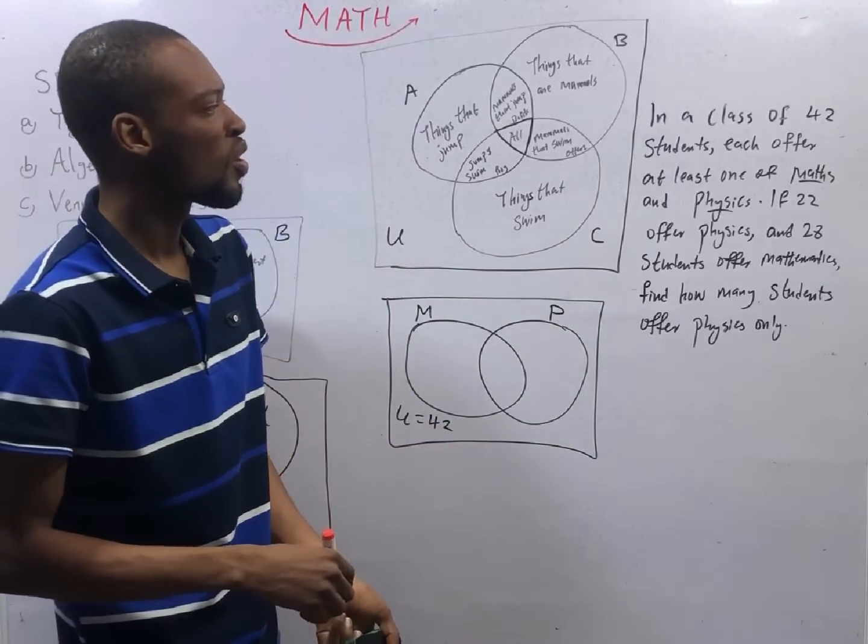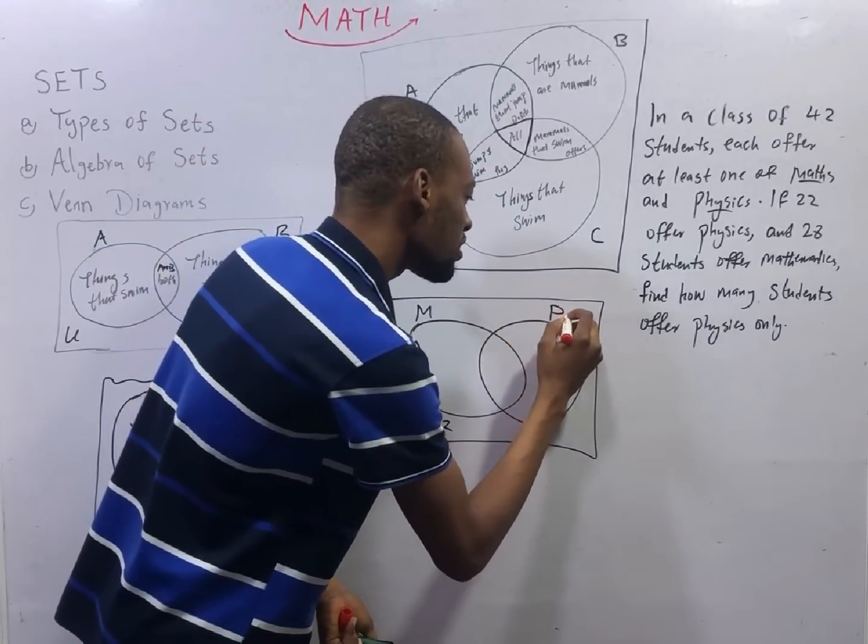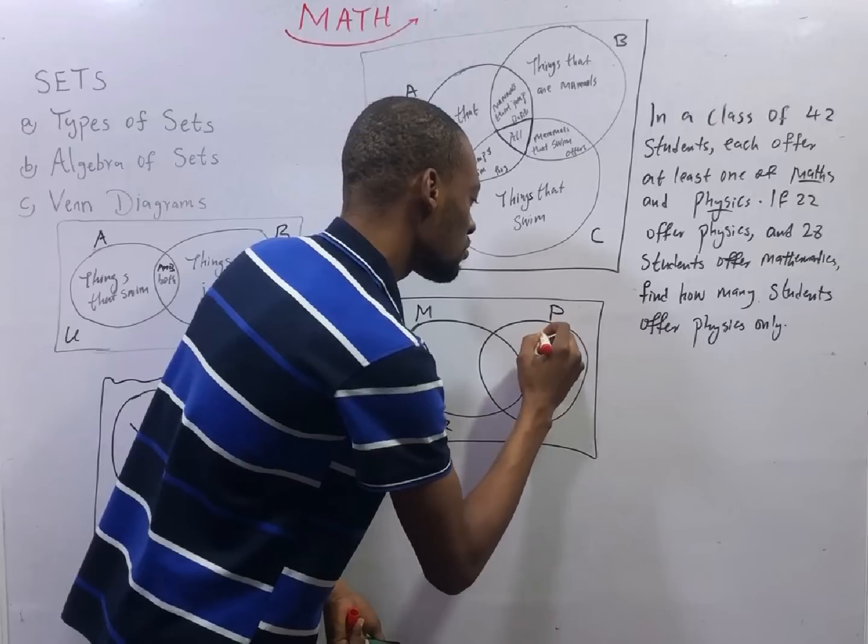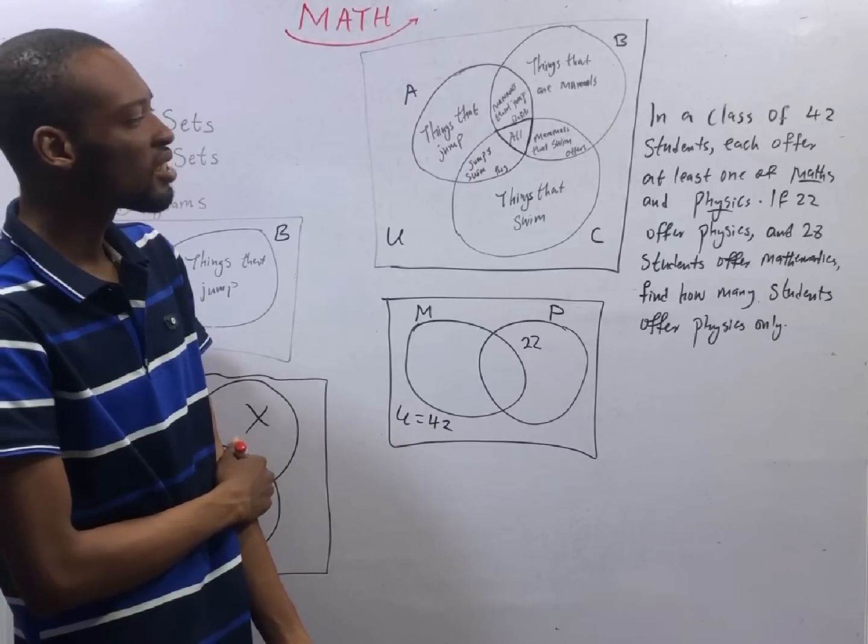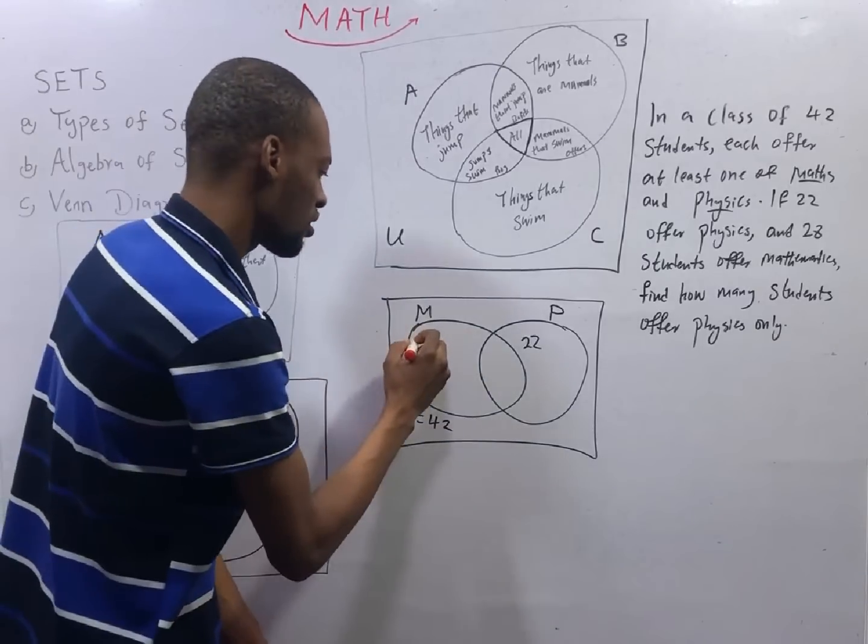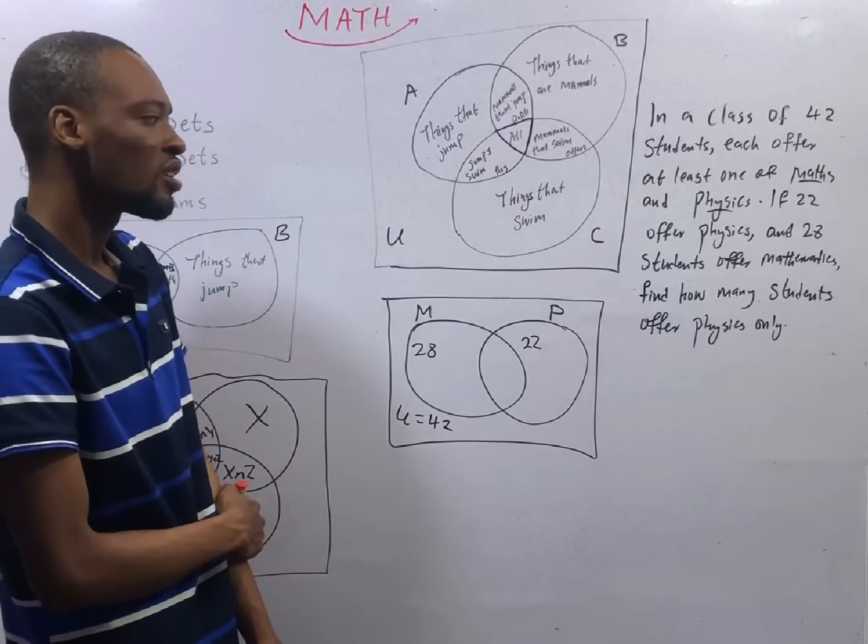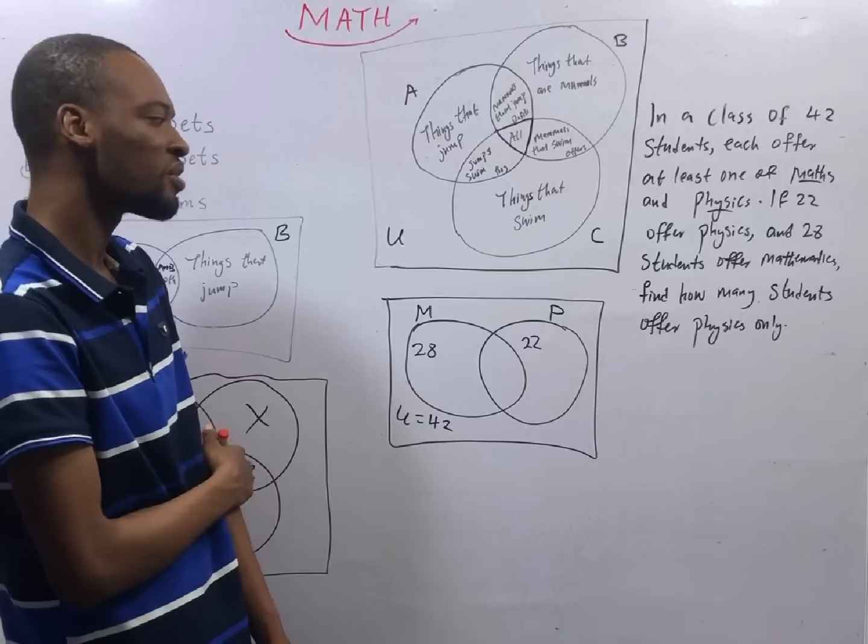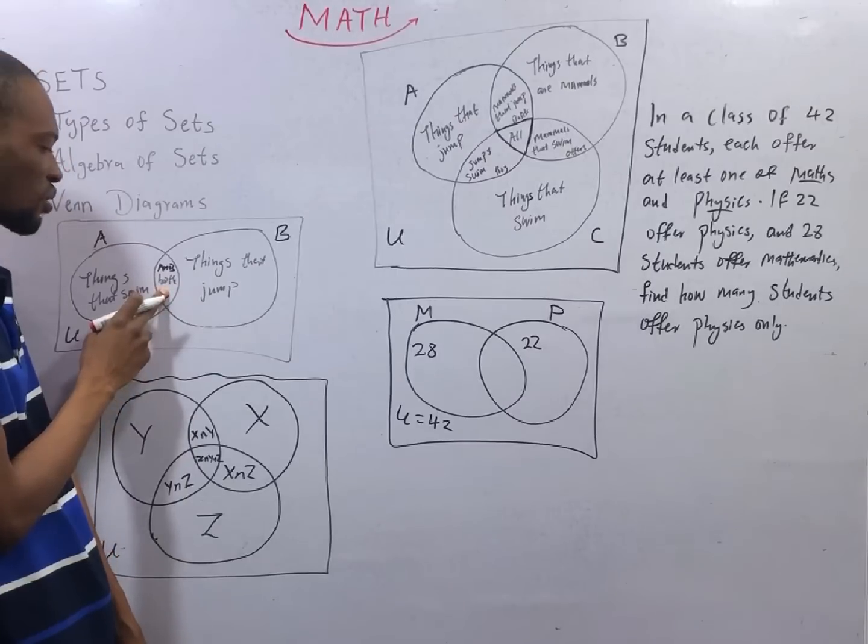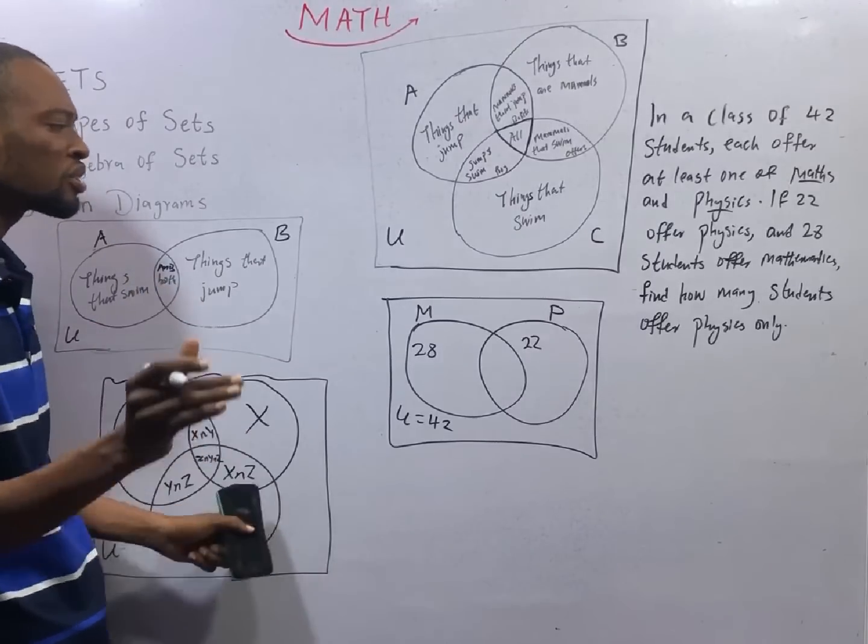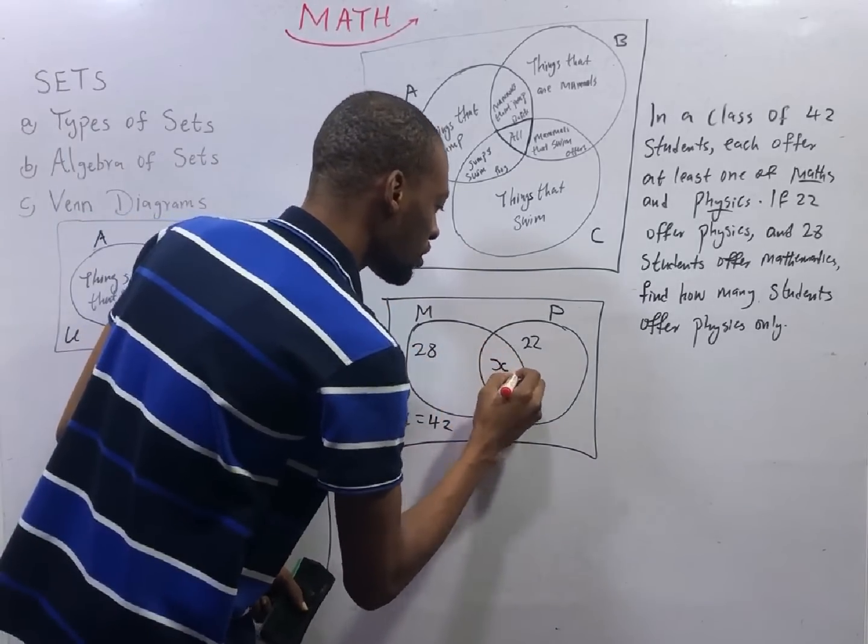22 offer physics. So physics, let's say physics 22. And mathematics 28. How many students offer physics only? We know that here represents intersection, those who offer both the subjects. So let those who offer both mathematics and physics be S.